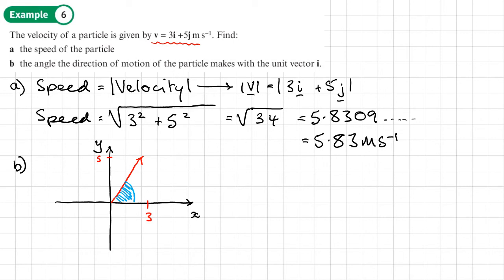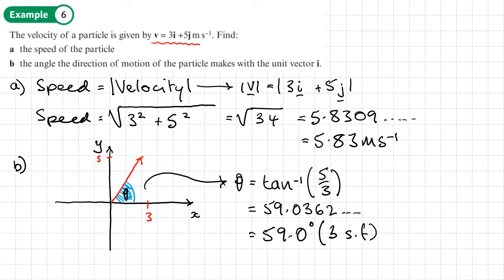If we call this angle theta, then theta is going to be equal to the tan inverse of the opposite over the adjacent, so tan inverse of 5 over 3. That is 59.0362. We want to give the angle to 3 significant figures, so 59.0 degrees, and that's 3 significant figures.